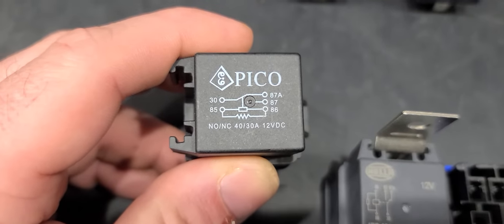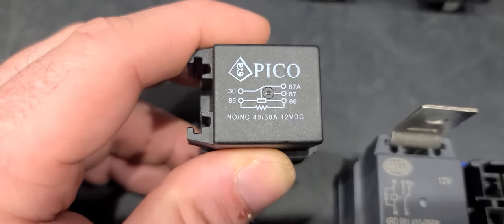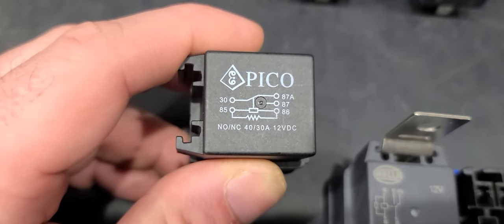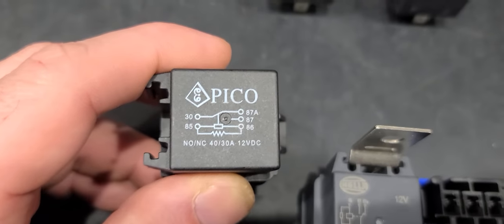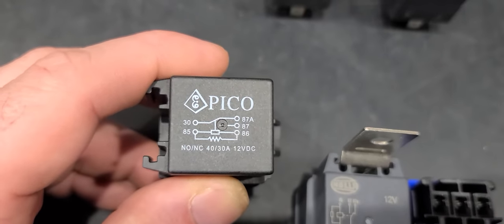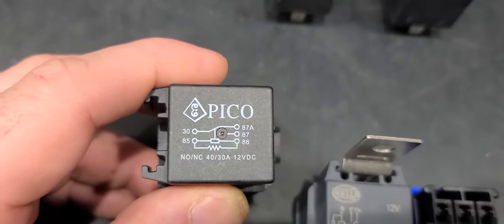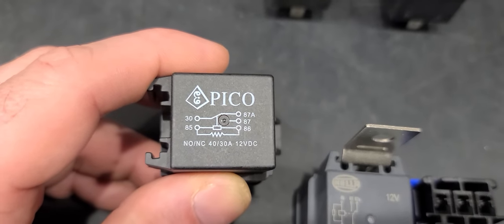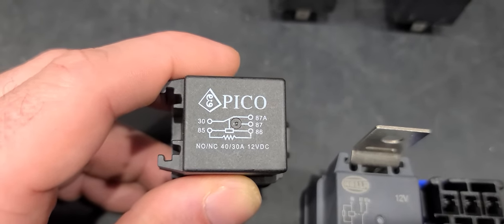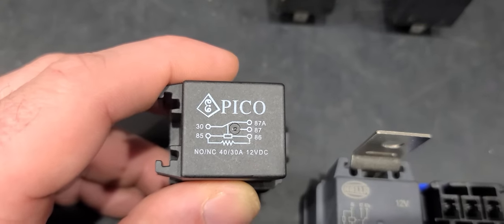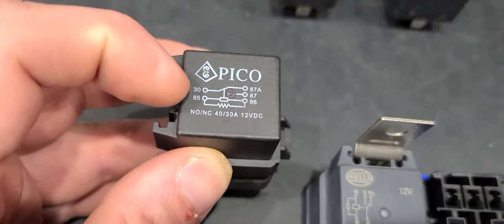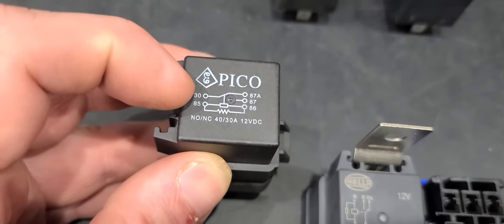85 and 86 need power and ground. That's the coil for the relay. The coil carries no load but it's basically the on-off switch. Once you apply power and ground, one on each, it'll switch from the load which is on pin 30 over to 87.